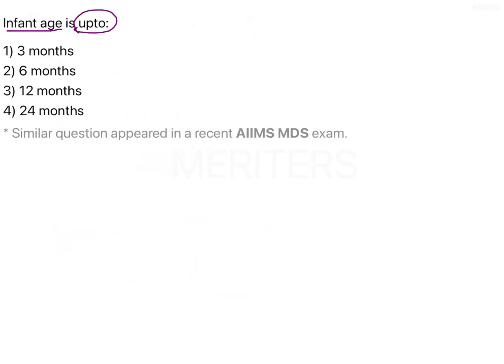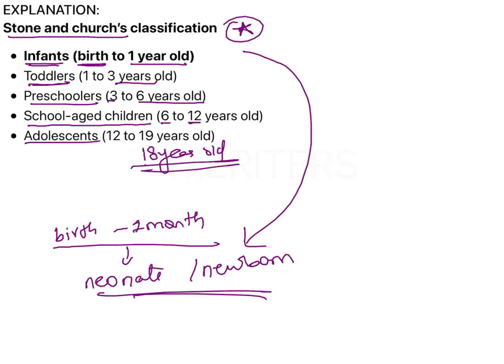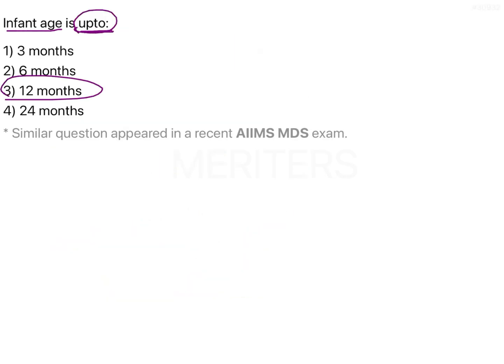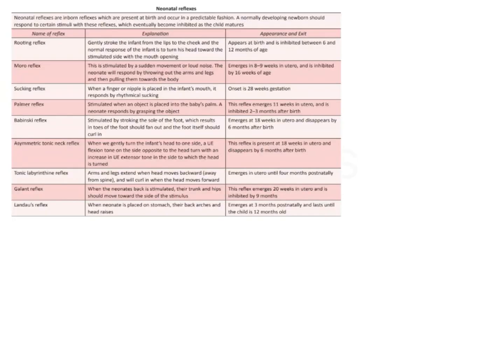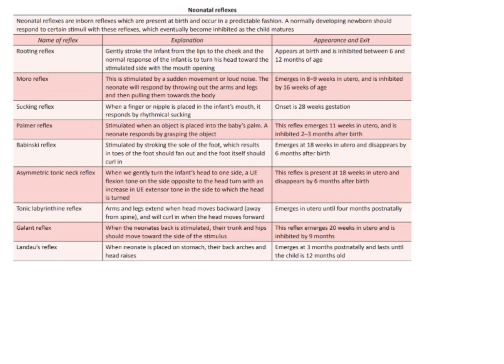So the upper limit to be called an infant is one year, that is 12 months. A child will be called an infant until they are 12 months of age. After their first birthday they will become a toddler.